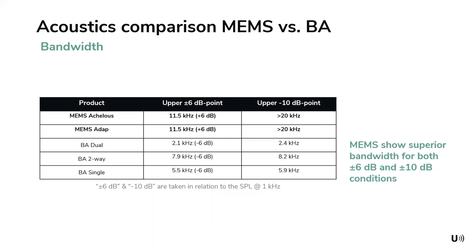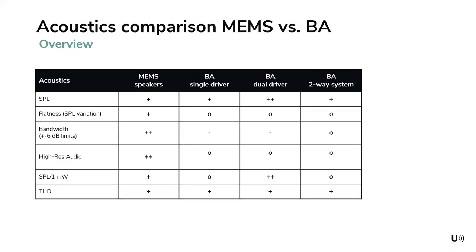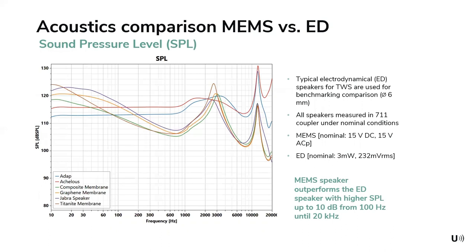This table summarizes the comparison of MEMS loudspeaker versus balanced armature loudspeaker — against single driver, dual driver, and two-way balanced armature systems. Overall, the MEMS loudspeaker outperforms balanced armature in SPL, SPL flatness, bandwidth within ±6 dB limits, and IEC audio performance. THD is at the same level or better than balanced armature.